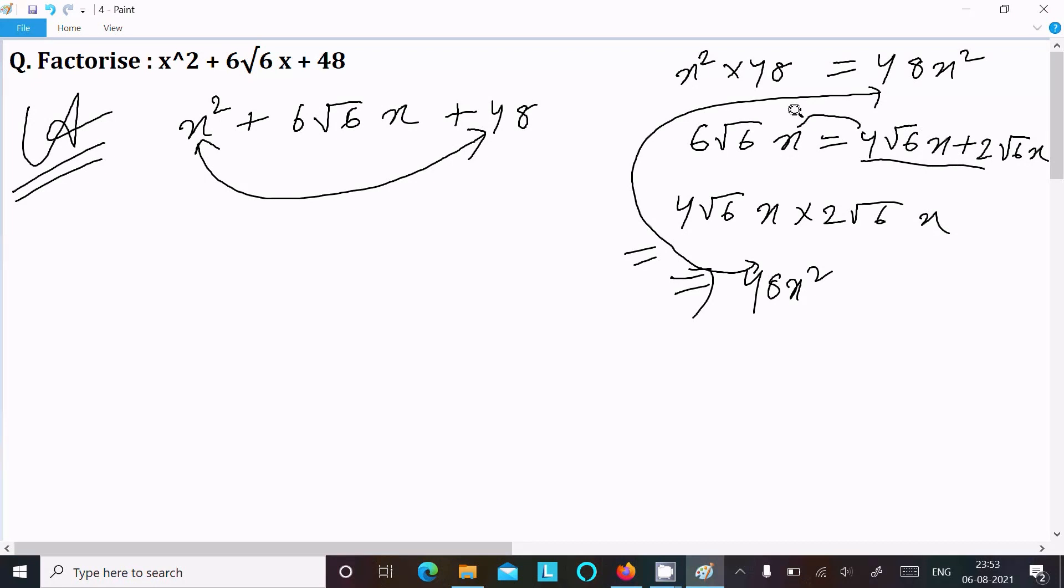Now writing x², and in place of 6√6x we can write 4√6x + 2√6x, then + 48. Now, take the common factors.